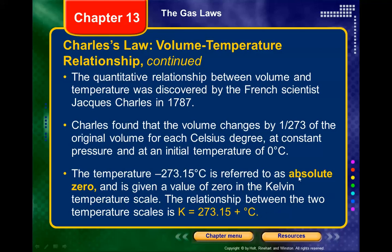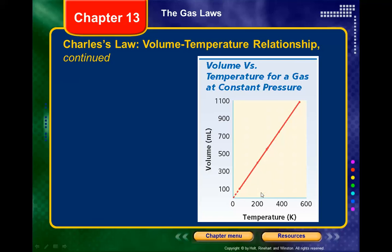Absolute zero is the temperature at which volume would reach zero, continuing the decrease in volume — that temperature would be negative 273°C. That's why we use Kelvin in these gas laws: volume is proportional to Kelvin temperature, not Celsius temperature.